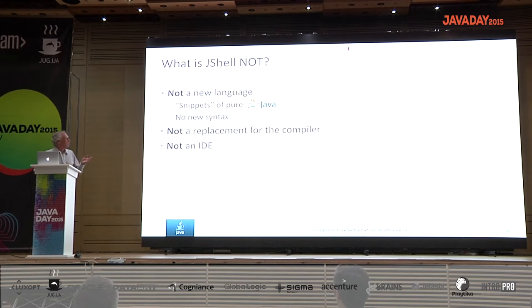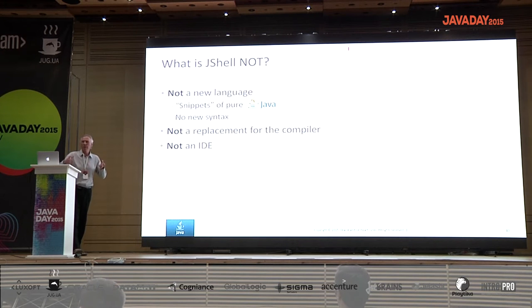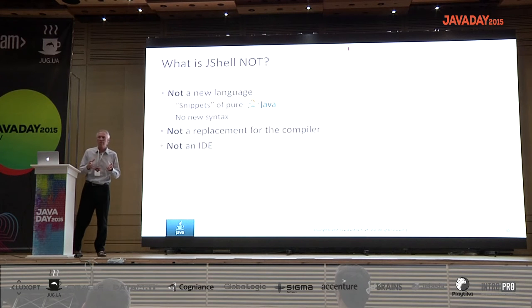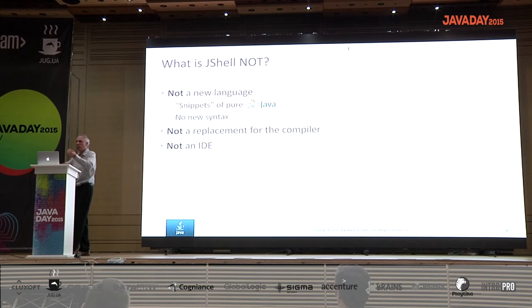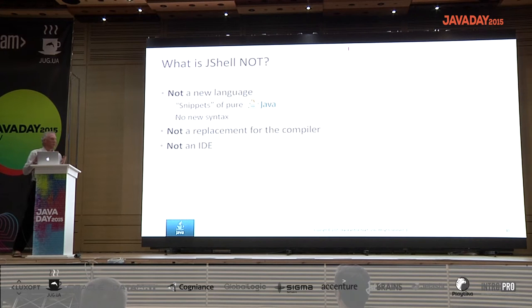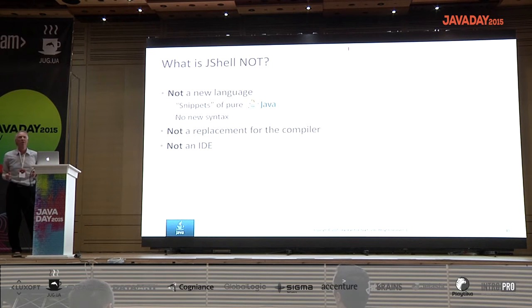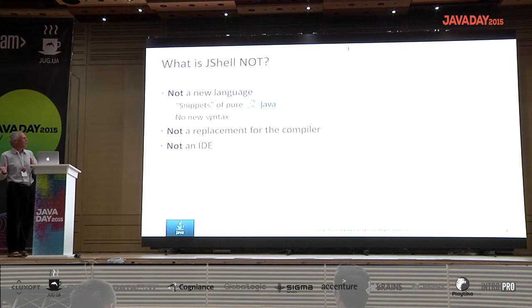JShell is not a replacement for the compiler. The compiler is designed for compiling programs, and JShell is for exploring. Also, anytime you have a tool for programming, it's tempting to keep adding features until you have an IDE. The idea of this tool is very focused. One of the aspects of having an API for JShell is we're very keen to have this functionality as part of IDEs.